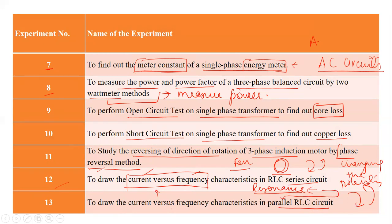In this way, we have 13 experiments. A minimum of 10 experiments need to be performed and written in the files. It depends upon the course coordinator for the remaining three experiments. So minimum 10 are required, but there may be 11, 12, or all 13 experiments performed.